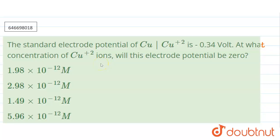Hello everyone, so today's question is: the standard electrode potential of Cu to Cu2+ is minus 0.34 volts. At what concentration of Cu2+ ions will this electrode potential be zero? They are talking about this electrode potential as EMF of cell and this standard electrode potential is E⁰ of cell.